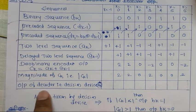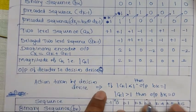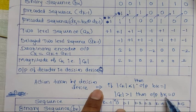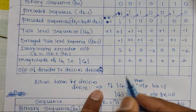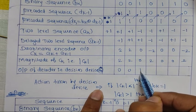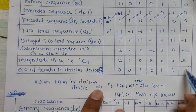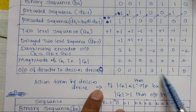Finally, we write the output of the decoder — the decision device. The rule is: if |ck| < 1, then output bk = 1; if |ck| > 1, then output bk = 0. Applying this: values greater than one (i.e., 2) give output 0, and values less than one (i.e., 0) give output 1. The received sequence is: 0, 0, 1, 0, 1, 1, 0 — which is the same as the original input sequence, confirming correct decoding.